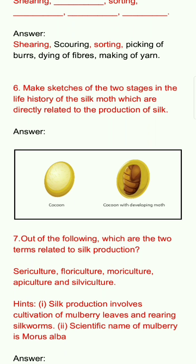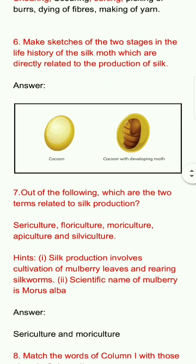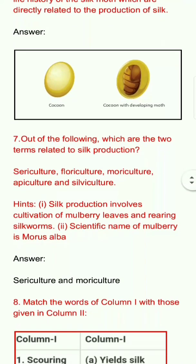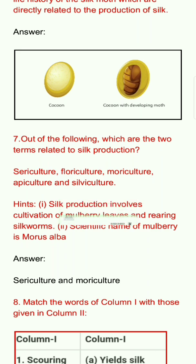Seventh question: Out of the following, which are the two terms related to silk production? Options: sericulture, floriculture, moriculture, apiculture, and silviculture. Hint: Silk production involves cultivation of mulberry leaves and rearing of silkworms. The scientific name of mulberry is Morus alba. Answer: sericulture and moriculture.